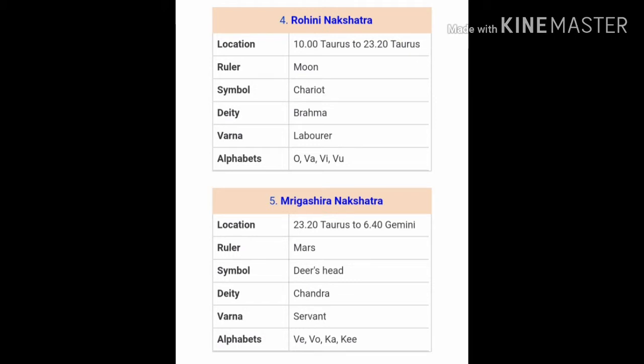The fifth Nakshatra is Mrigashira Nakshatra. Mriga means deer and Shira means head, so the symbol of this Nakshatra is a deer's head. This Nakshatra is also ruled over by the Moon. Generally, Mrigashira Nakshatra people are very tender, kind, soft-spoken and gentle like a deer. Therefore the Varna is given as a servant, meaning these people are very loyal to their masters.